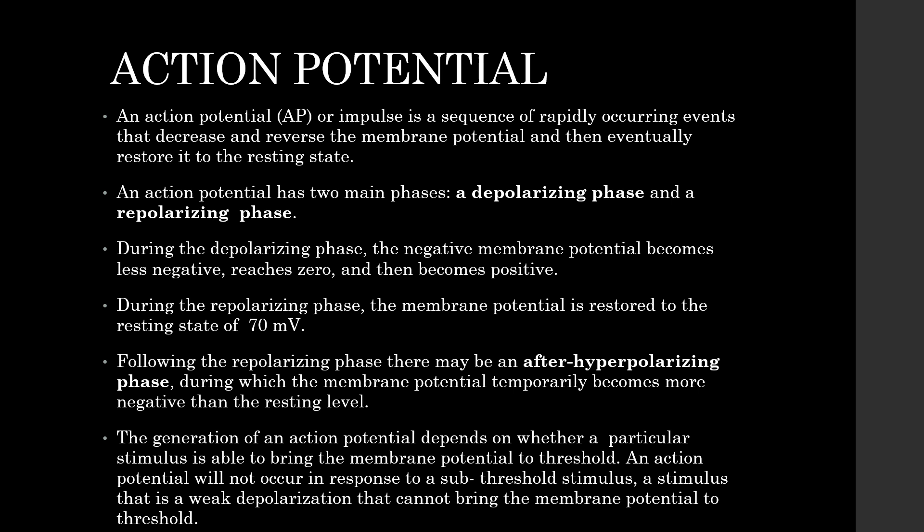Action Potential. An action potential is a sequence of rapidly occurring events that decrease and reverse the membrane potential and then restore it to the resting state. An action potential has two main phases: a depolarizing phase and a repolarizing phase. During the depolarizing phase, the negative membrane potential becomes less negative, reaches zero, and then becomes positive. During the repolarizing phase, the membrane potential is restored to the resting state of -70 mV. Following the repolarizing phase, there may be an after-hyperpolarization phase during which the membrane potential temporarily becomes more negative than the resting level. The generation of an action potential depends on whether a stimulus is able to bring the membrane potential to threshold; an action potential will not occur in response to a sub-threshold stimulus — a weak depolarization that cannot bring the membrane potential to threshold.